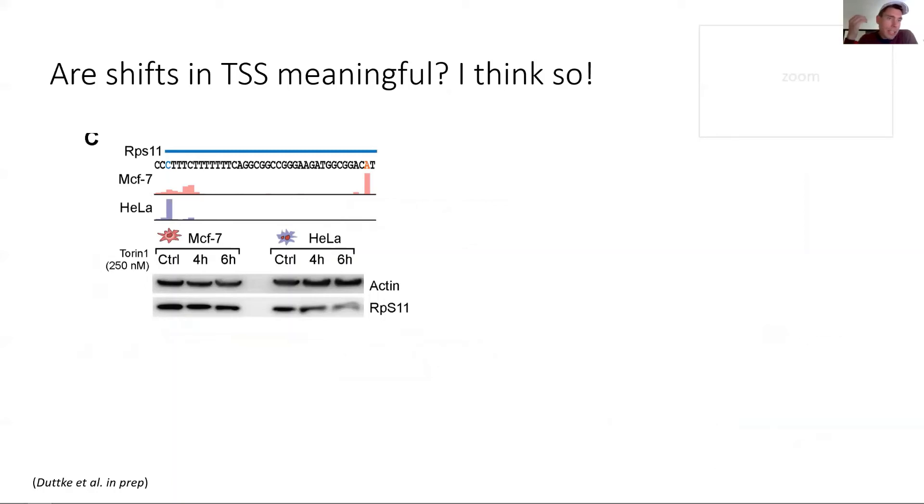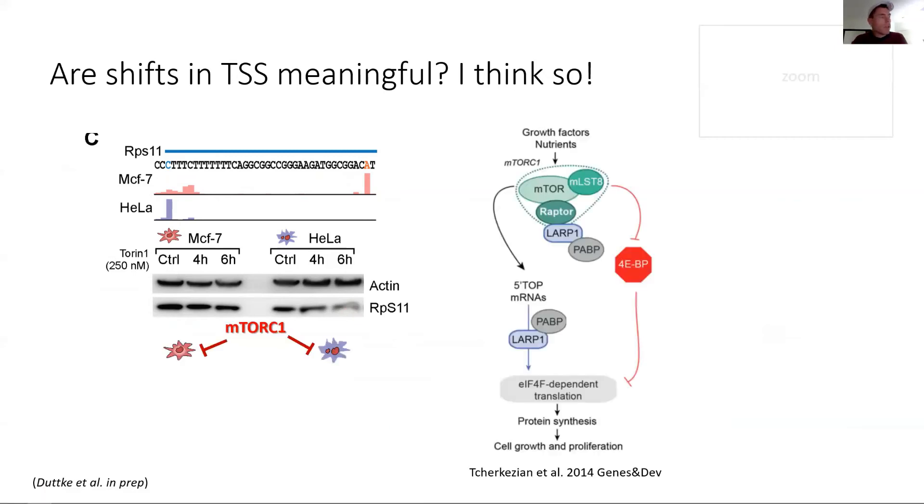A quick question: are the shifts in transcription start sites meaningful? I think so. Here is from some work we are hopefully getting out soon. This is the RPS11 gene which has different start sites between HeLa cells and MCF7 cells. As you can see, this results in differences in protein expression upon treatment of these cells with the mTOR inhibitor, torin 1.